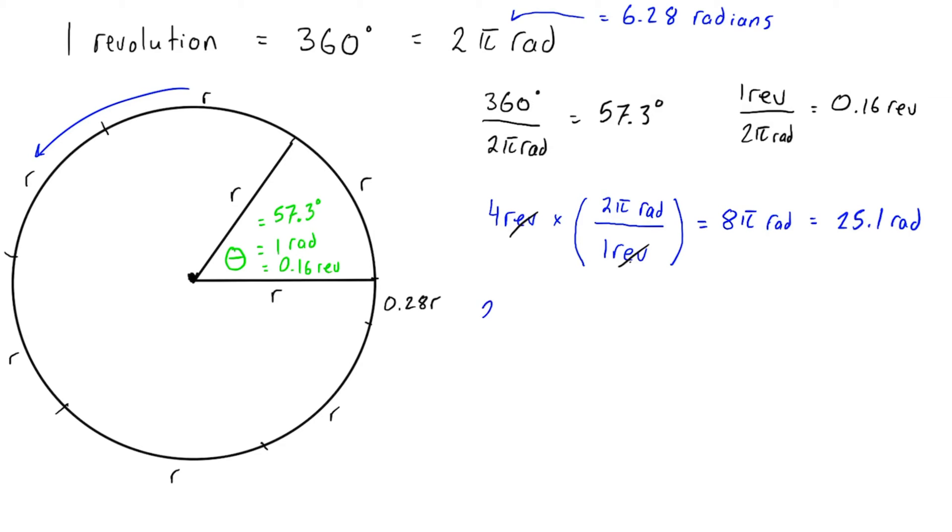Let's do another example. Let's convert 270 degrees into revolutions. To do that, we would multiply this by the fraction where we have degrees on the bottom, so 360 degrees, and revolutions on top, that would be one revolution.